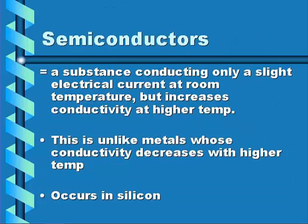Semiconductors are another type of network solid because they occur in silicon, which is a network solid. Semiconductors are a substance conducting only a slight electric current at room temperature; however, as temperature increases, conductivity increases. This is unlike other metals whose conductivity usually decreases with higher temperature — this is important for things like computers, where we wouldn't want them to shut down as they heat up.